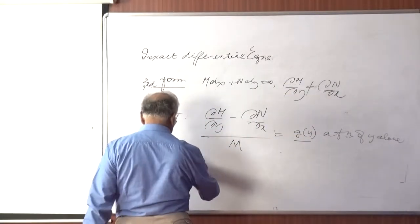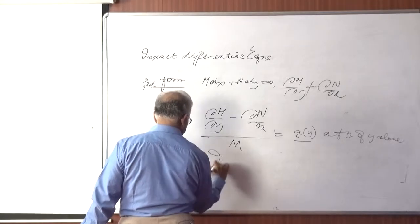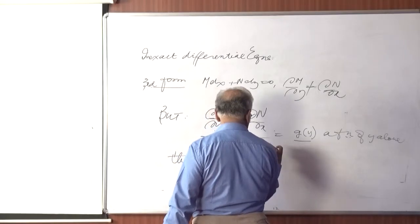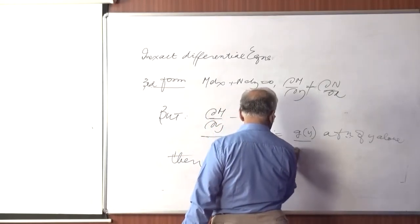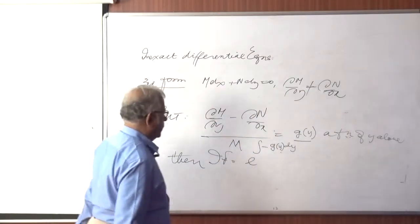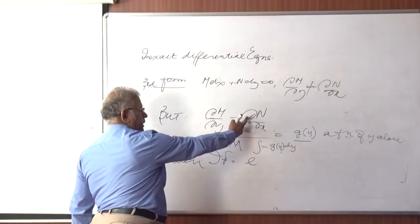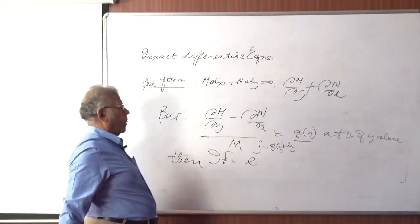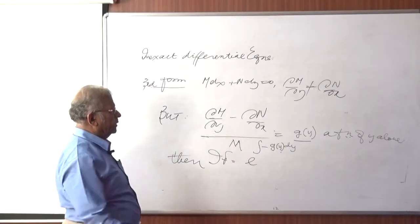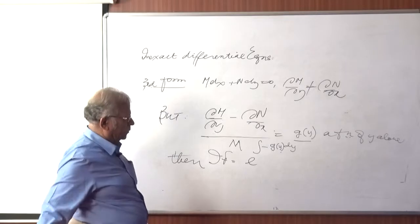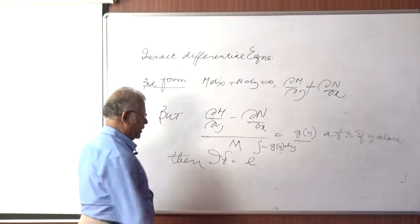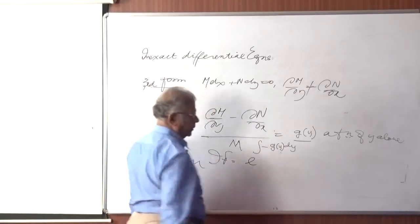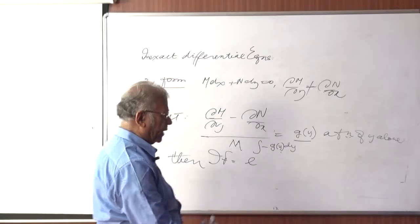Then an IF is e to the power of integral minus g(y) dy. Some authors write this as (∂n/∂x - ∂m/∂y) is g(y), then this minus sign is not needed. But we have kept the numerator same for form second and form third. And therefore, we have to keep in mind that the IF is equal to e to the power of integral minus g(y) dy. Whichever way it is written, the integrating factor can be found out.